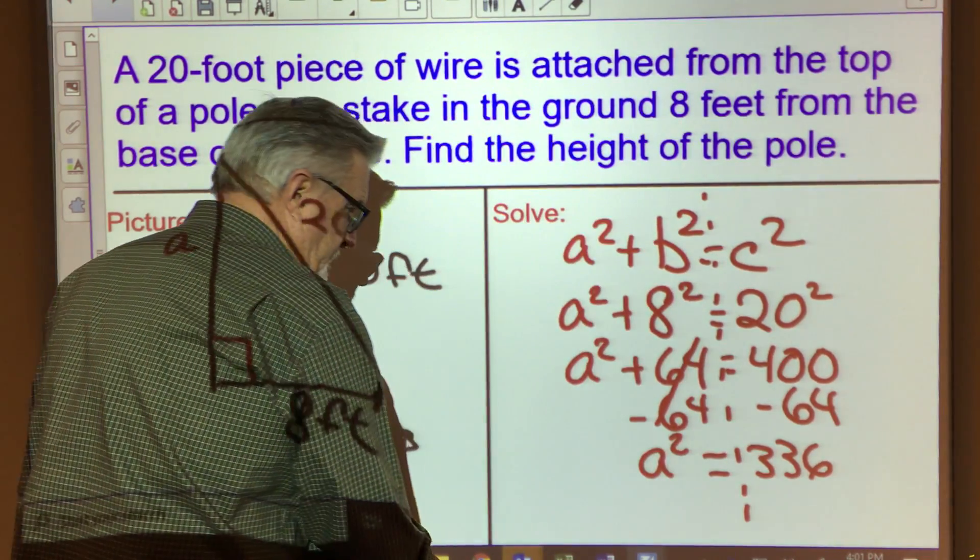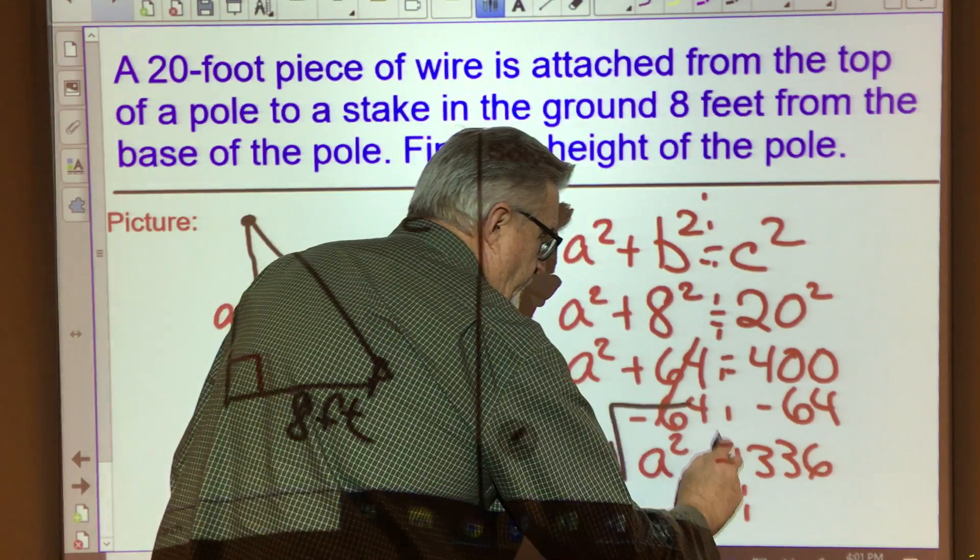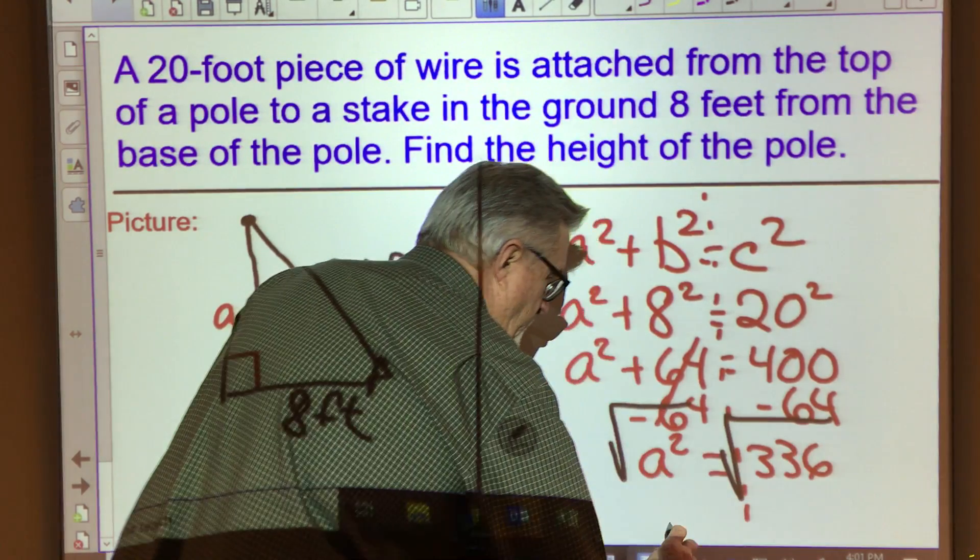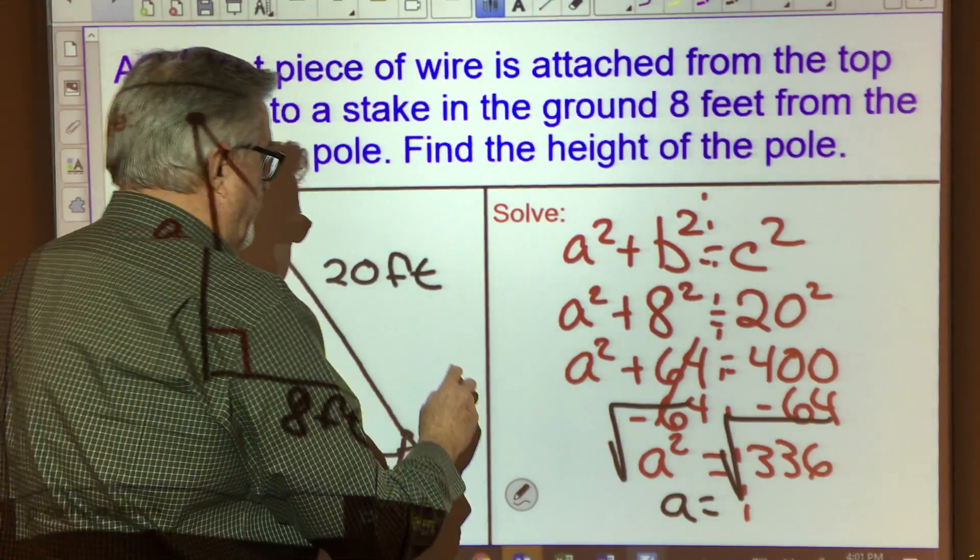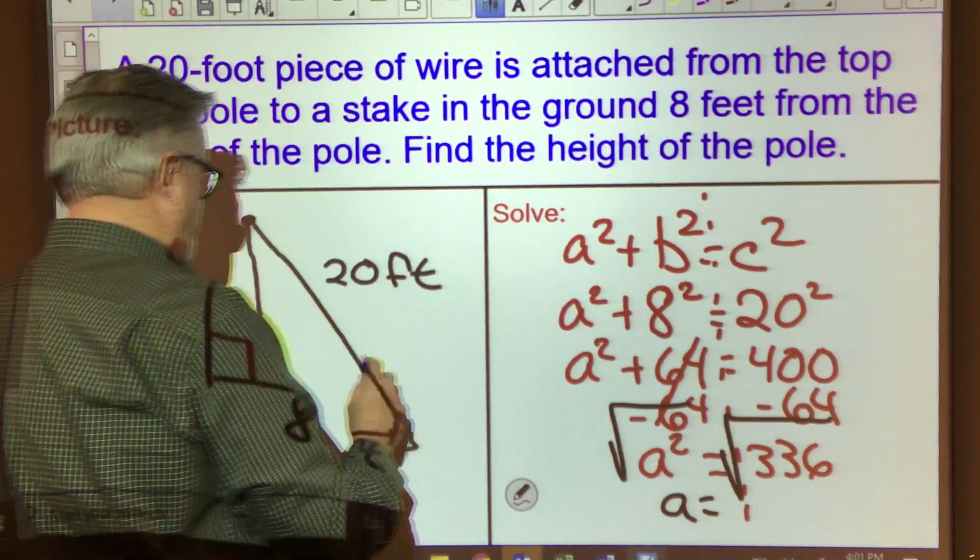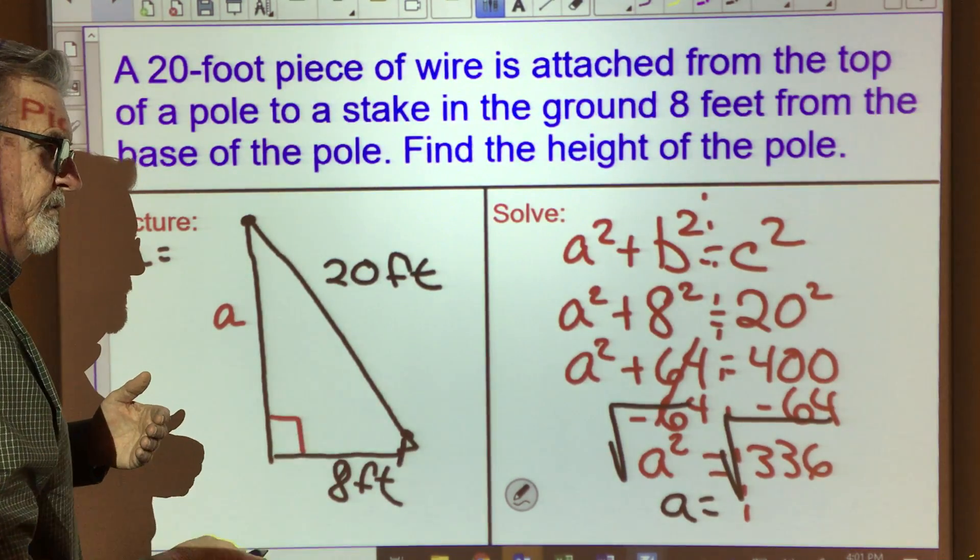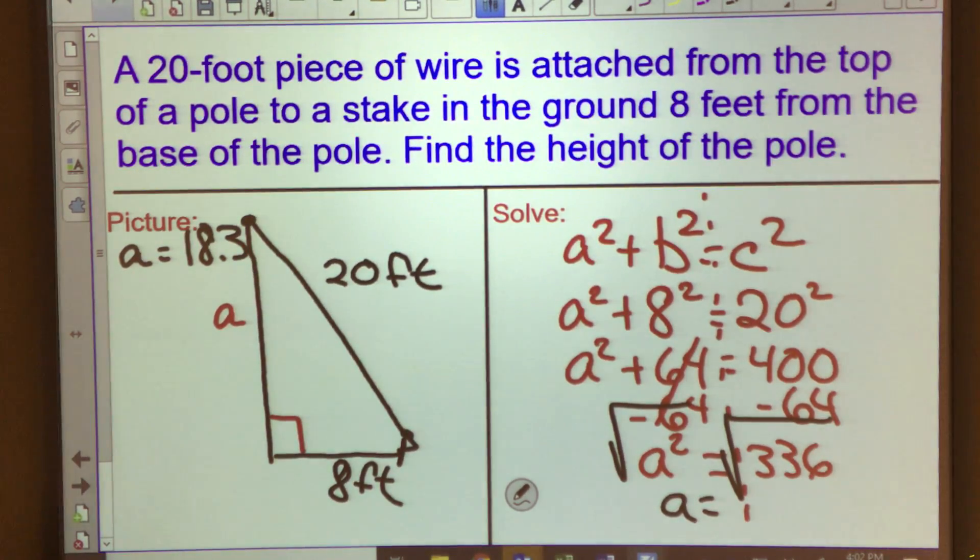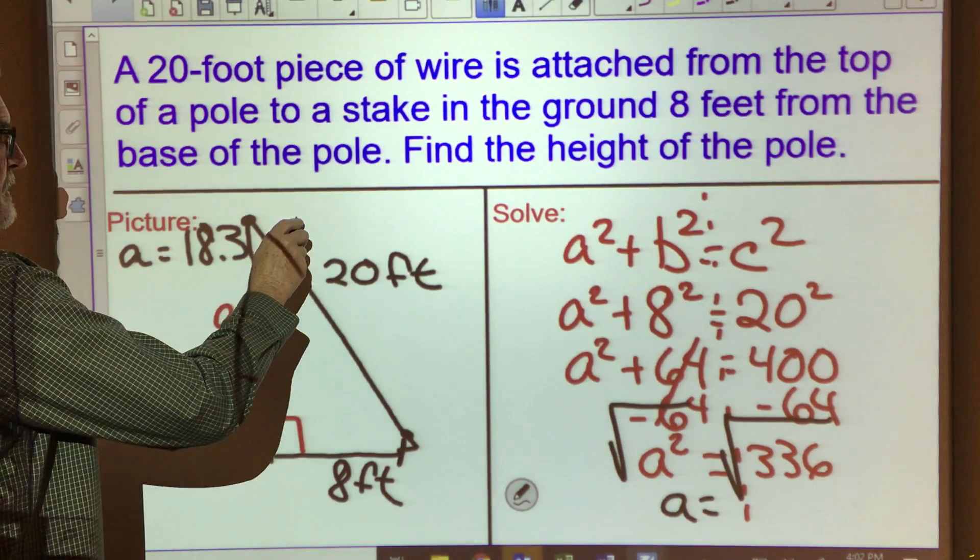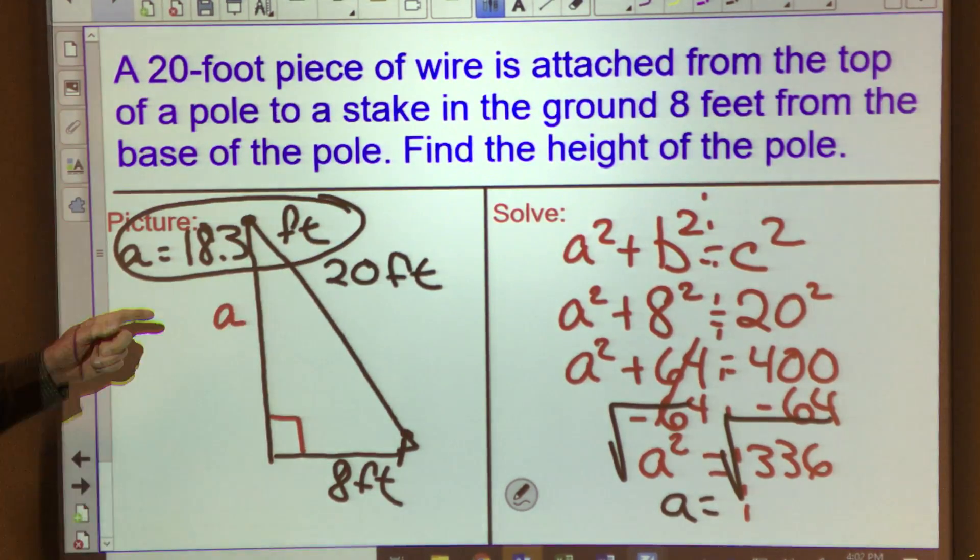All right, what's the last step when we're working with the Pythagorean theorem? Absolutely, we've got to square root both of those. So we're going to get a is equal to... I'm going to come over here because I'm running out of room there. So I'm going to come over here and just say that a is equal to, and when I square root 336, I get 18.3 if I round it to the nearest tenth. So that would be 18.3 feet. So our solution would be the flagpole is 18.3 feet tall.